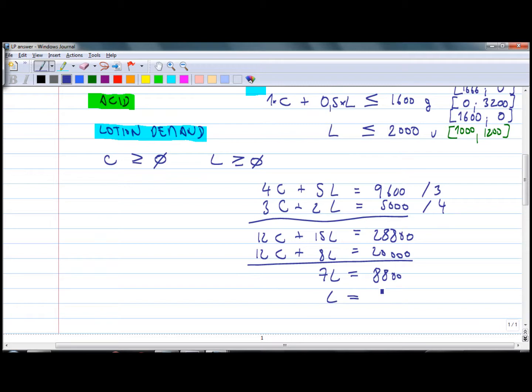If we subtract the second equation from the first equation, we get 7L equals 8800. Therefore L equals 1257.14. If we substitute to the first equation, we get C equals 828.58.